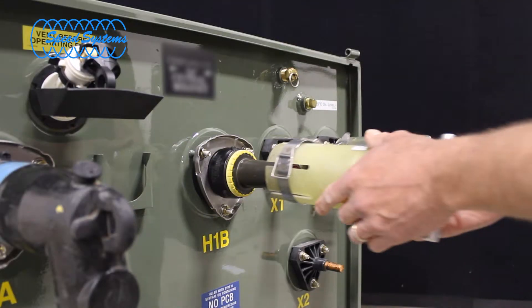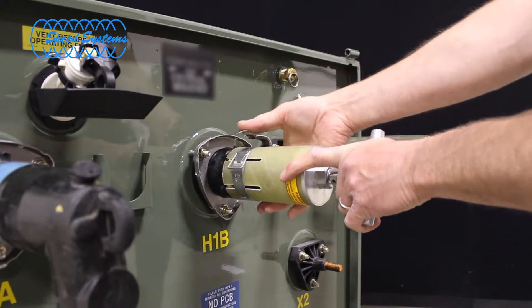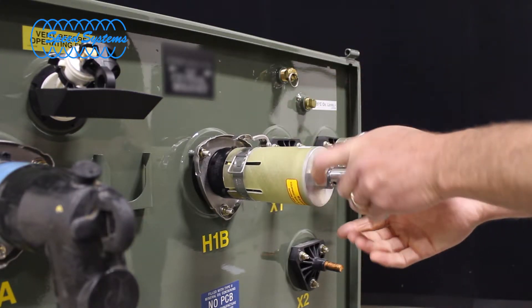Open the quick clamp lever to allow the insert to slide into the tool. Center the probe on the insert until the shoulder contacts the bottom of the tool's tube and close the quick clamp lever to securely clamp the insert in the tool.